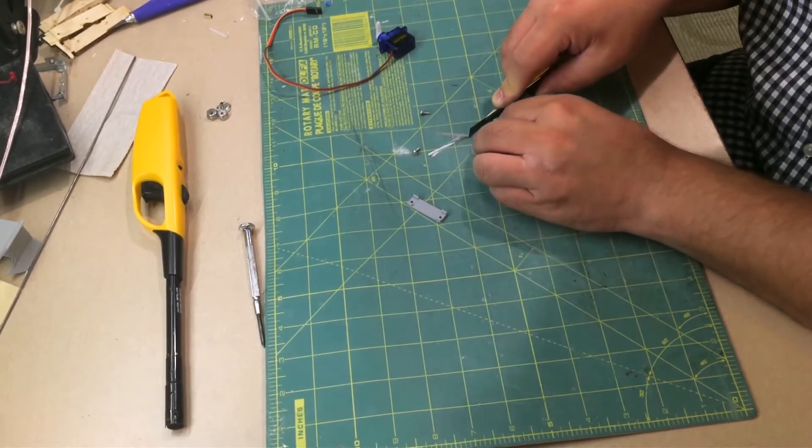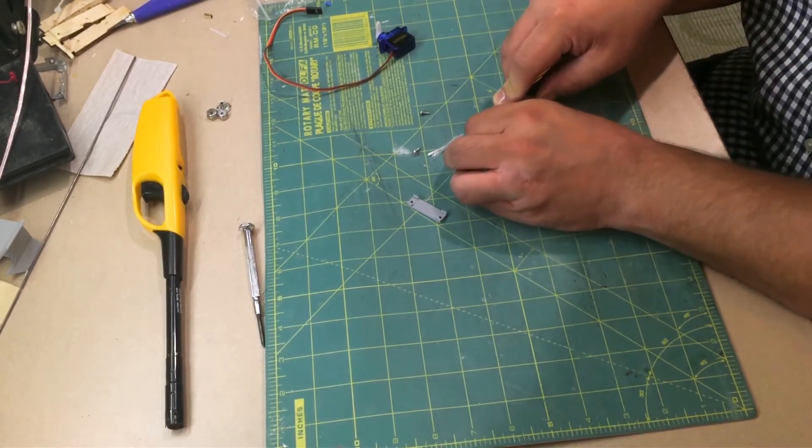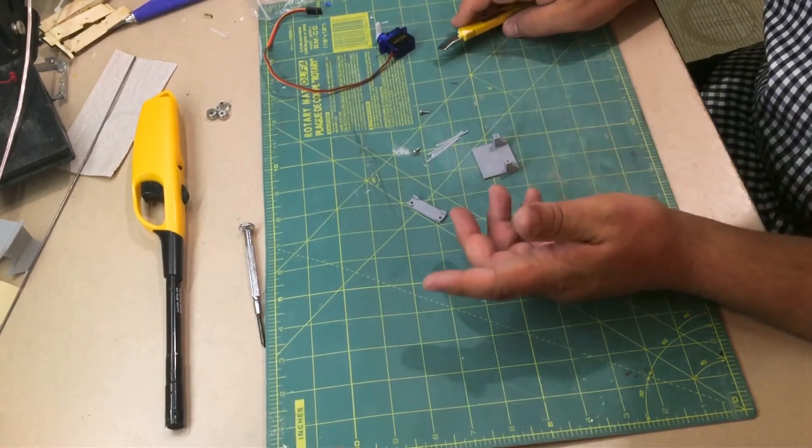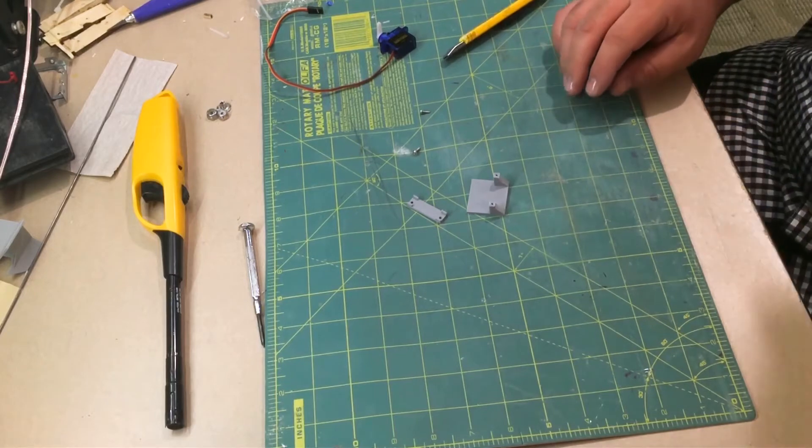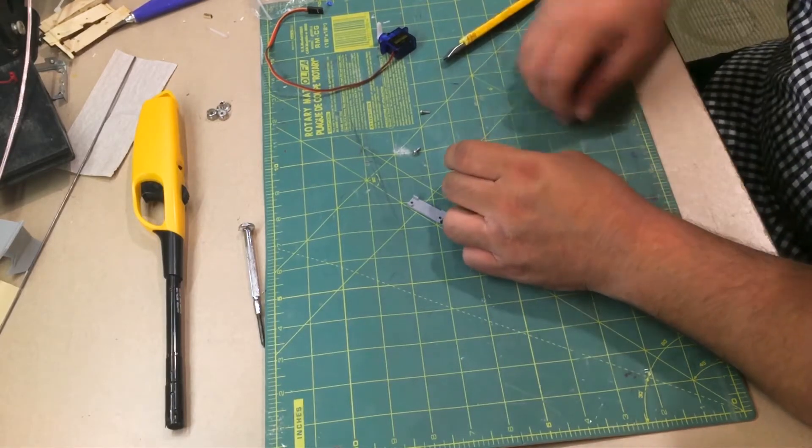This is just material that's used to help the part adhere to the build surface of your 3D printer, and this is the way that I find is easiest for me to remove.